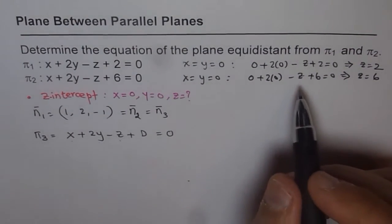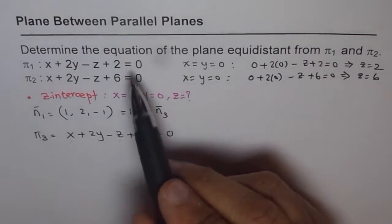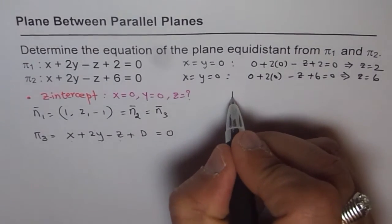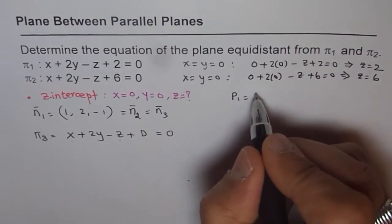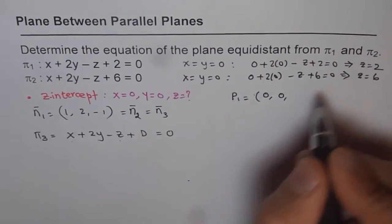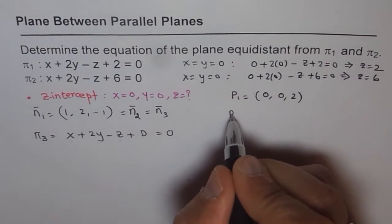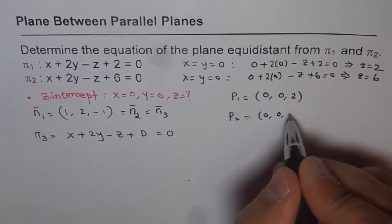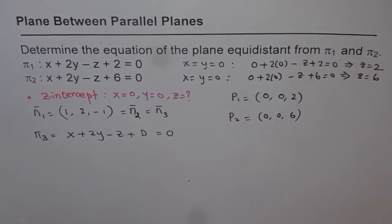Therefore, the two points on these planes, let me call them as P1 and P2. P1 is equals to (0, 0, 2). And P2, the point on the second plane, is (0, 0, 6). So these are points on these two planes and we have taken z-intercepts.